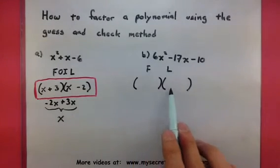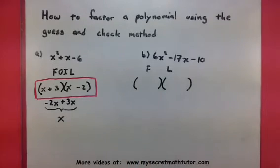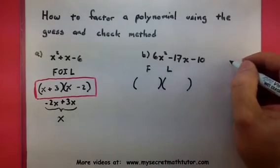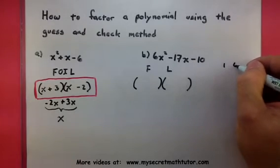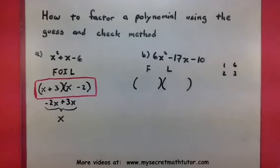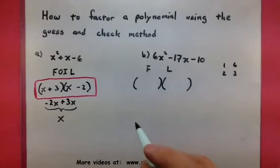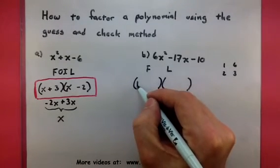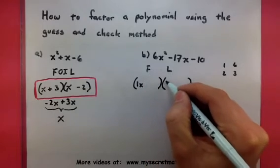I want to first establish what my first and last terms need to be. So I want to think of two things that multiply to give me a 6x squared. Now, here's the problem. It could be 1 and 6, or it could be 2 and 3. Those two things might also be reversed. Maybe it's 6 and 1, or 3 and 2. So I want to write down some of those possibilities. So, 1, 6, or maybe 2 and 3. And go ahead and just put one of those in. So maybe 1x and 6x.